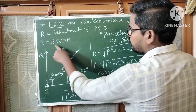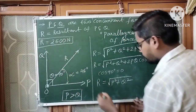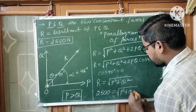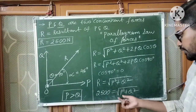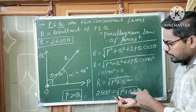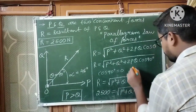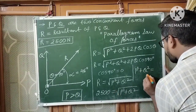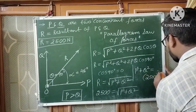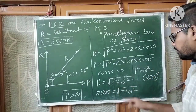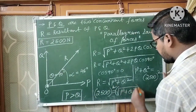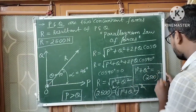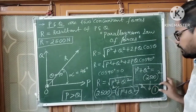R is already given as 2500 newtons. Putting R equal to 2500: 2500 equals the square root of P squared plus Q squared. Applying squaring on both sides to eliminate the square root, we get P squared plus Q squared equals 2500 squared. Let this be equation number 1.